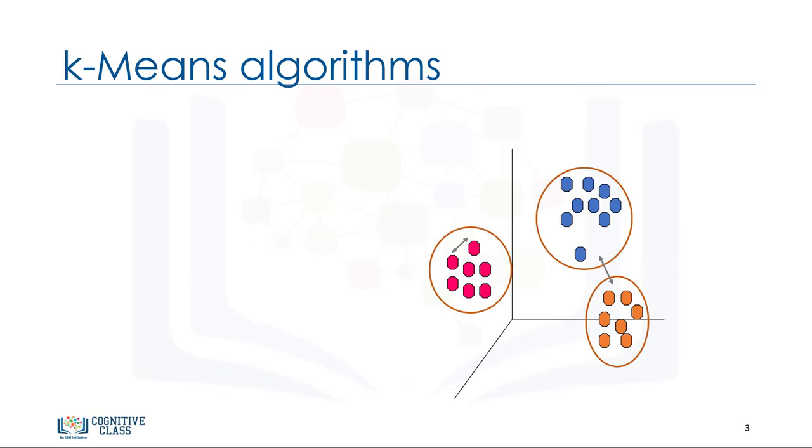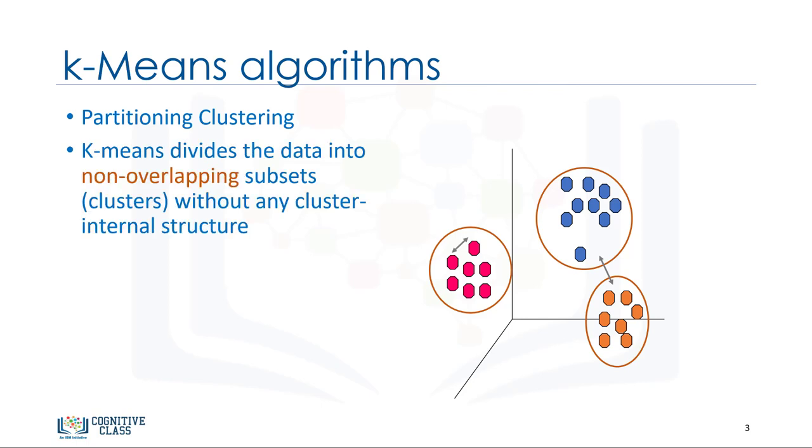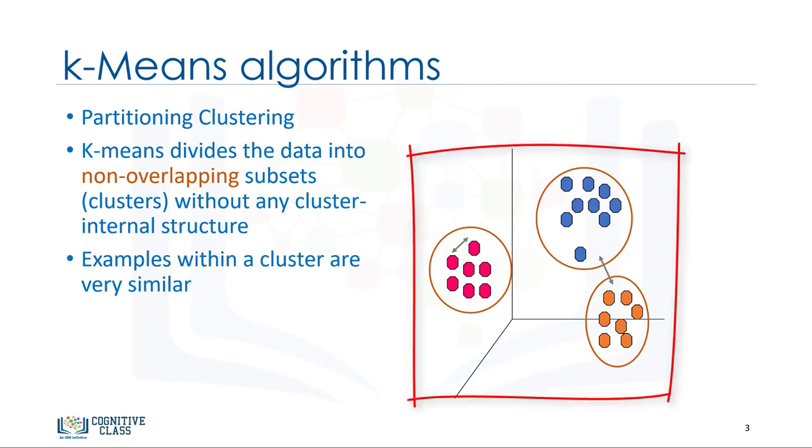Let's define this technique more formally. There are various types of clustering algorithms, such as partitioning, hierarchical, or density-based clustering. k-means is a type of partitioning clustering. That is, it divides the data into k non-overlapping subsets, or clusters, without any cluster internal structure or labels. This means it's an unsupervised algorithm. Objects within a cluster are very similar, and objects across different clusters are very different or dissimilar.